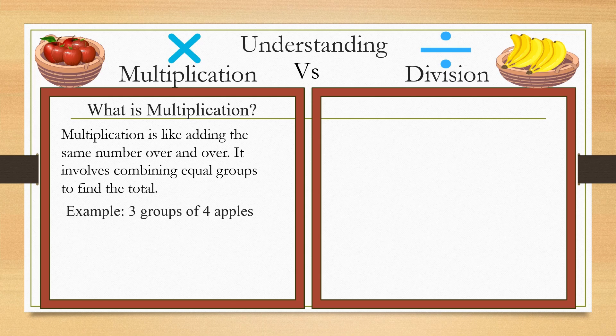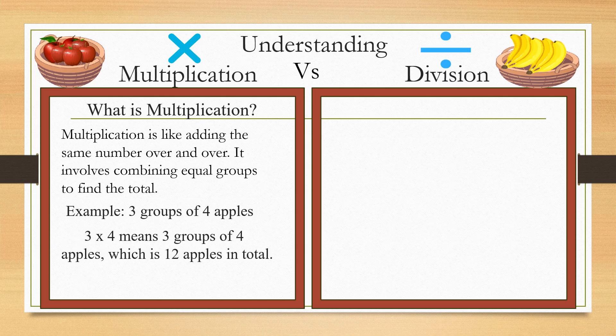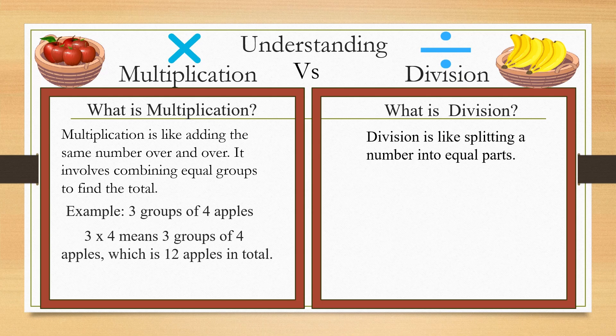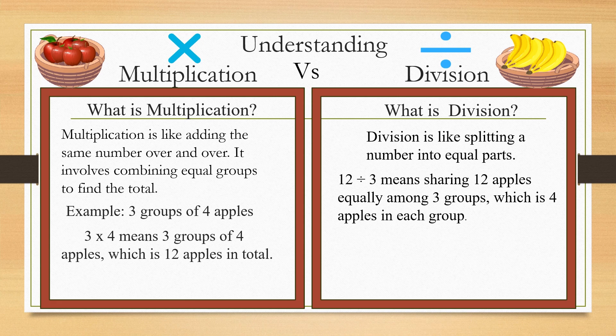Let us take an example. Three groups of four apples: three times four means three groups of four apples, which is 12 apples in total.